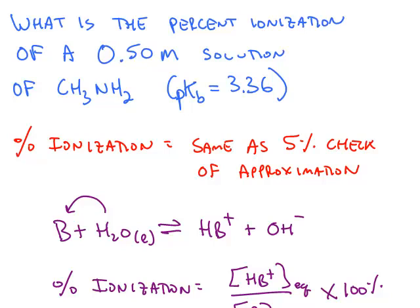When dealing with acids and bases, we can calculate what percent of the acid or base ionizes. For example, if we have a 0.5 molar solution of methylamine, CH3NH2,